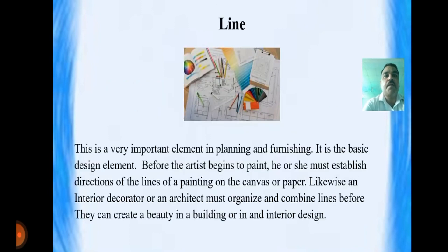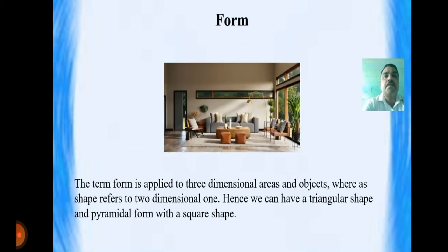The first element is line. Line is a very important element in planning and furnishing. It is a basic design element. Before the artist begins to paint, he or she must establish the direction of the line on the canvas or paper. Likewise, an interior decorator or architect must organize and combine lines before they can create beauty in a building or interior design.